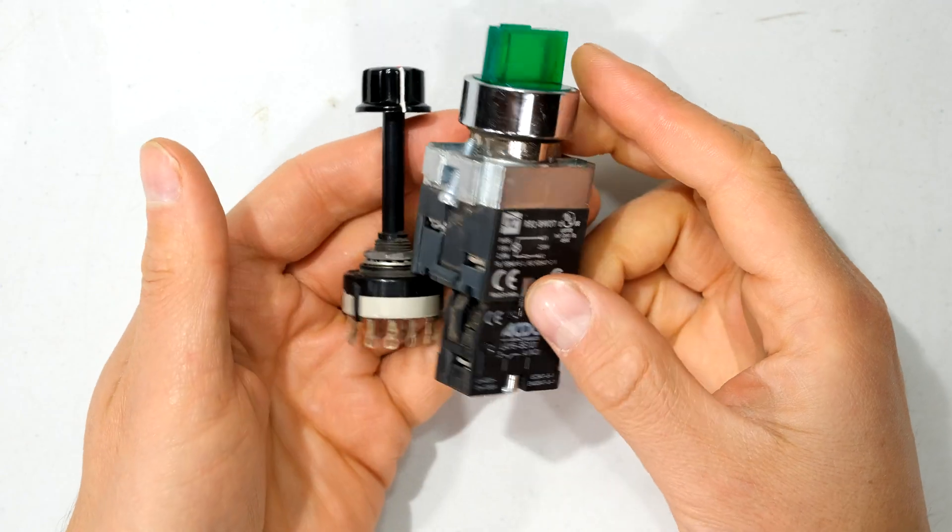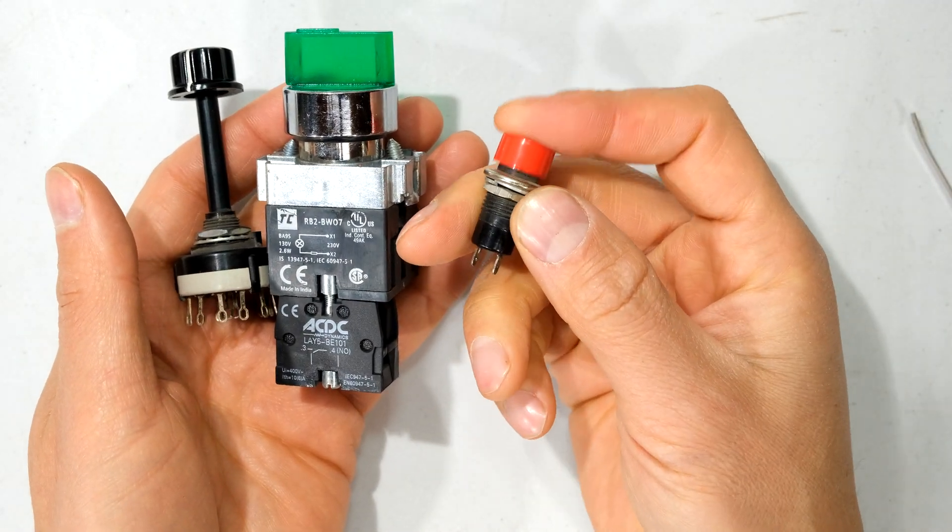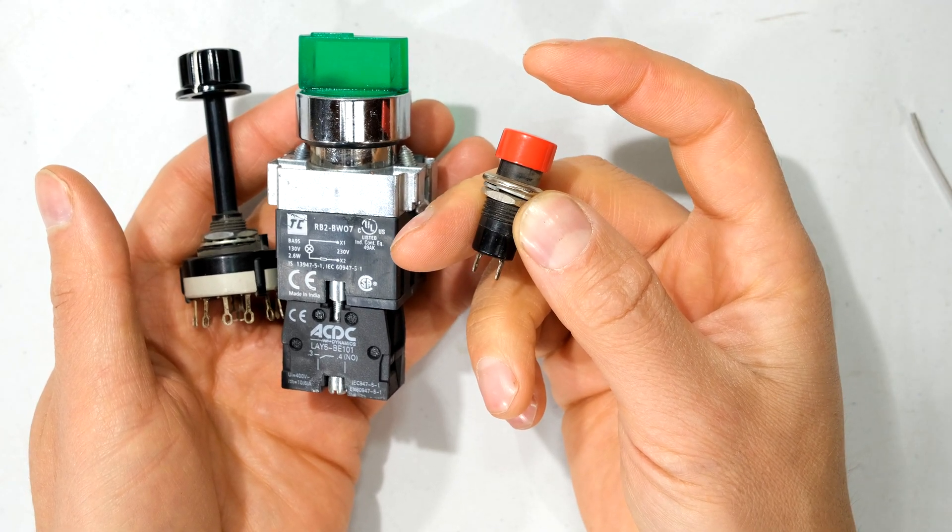Rotary switches are not considered momentary. A momentary switch is a switch where when you press it, it affects the change, and when you release it, the circuit goes back to its original condition.